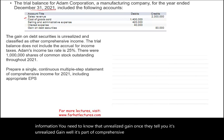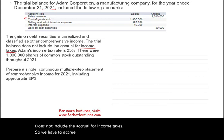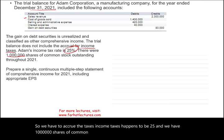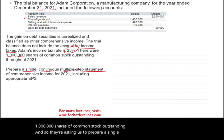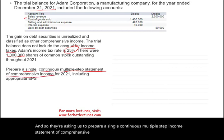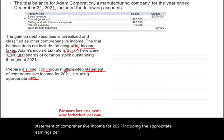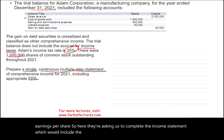The trial balance does not include the accrual for income taxes, so we have to accrue them. The income tax rate is 25%, and there are 1 million shares of common stock outstanding. We are asked to prepare a single continuous multiple-step income statement of comprehensive income for 2021, including the appropriate earnings per share, with comprehensive income as part of the income statement.